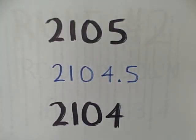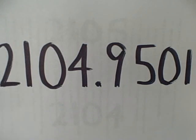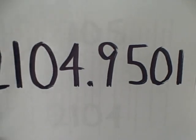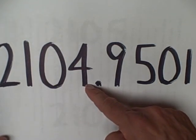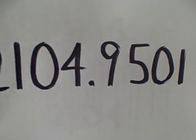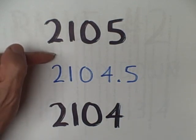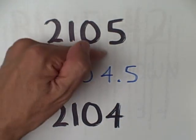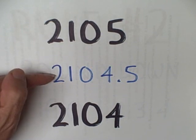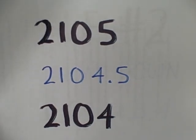Suppose we wanted to figure out whether to round this number to the ones place. Should we round down to two thousand one hundred and four, or round up to two thousand one hundred and five? We look to the right of the designated digit, which brings us to the tenths place, and we see a nine there. Since we see a nine, we round up. Two thousand one hundred and four point nine is past the halfway mark of two thousand one hundred and four point five, so we're closer to two thousand one hundred and five — round up.